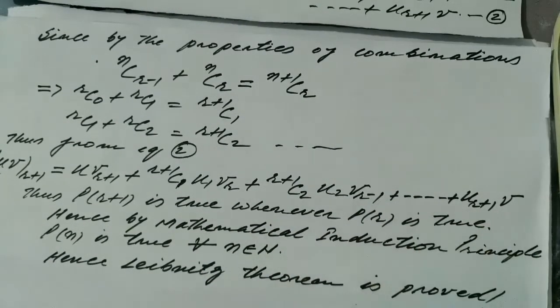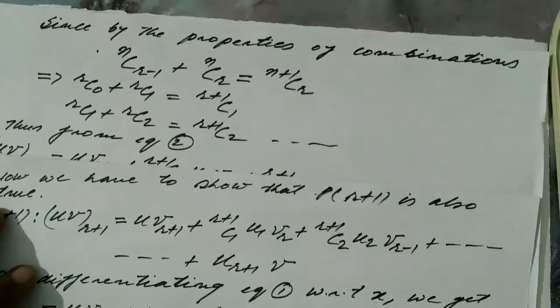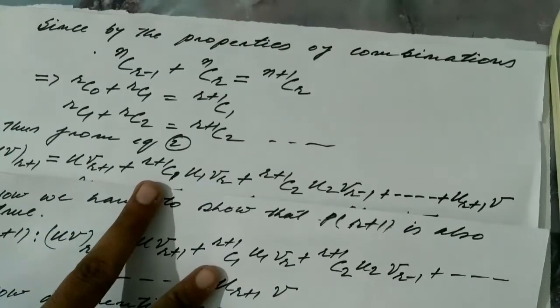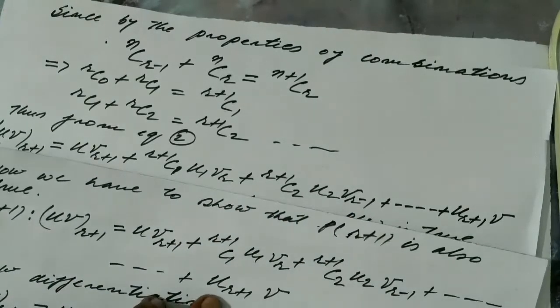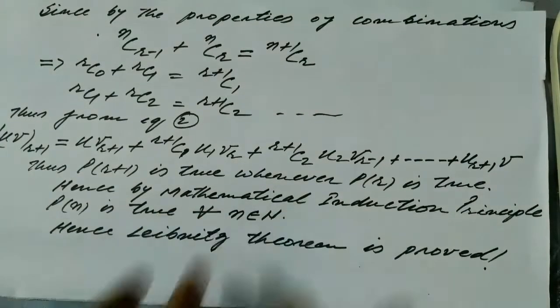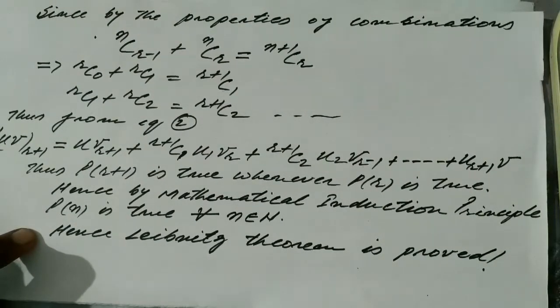This is the same statement as P(r+1) that we had established — with terms u·v_{r+1}, (r+1)C1·u1·v_r, (r+1)C2·u2·v_{r-1}, and the last term u_{r+1}·v matching exactly. Therefore, P(r+1) is true whenever P(r) is true. Hence, by the mathematical induction principle, P(n) is true for all n belonging to the natural numbers. Hence Leibniz's theorem is proved.